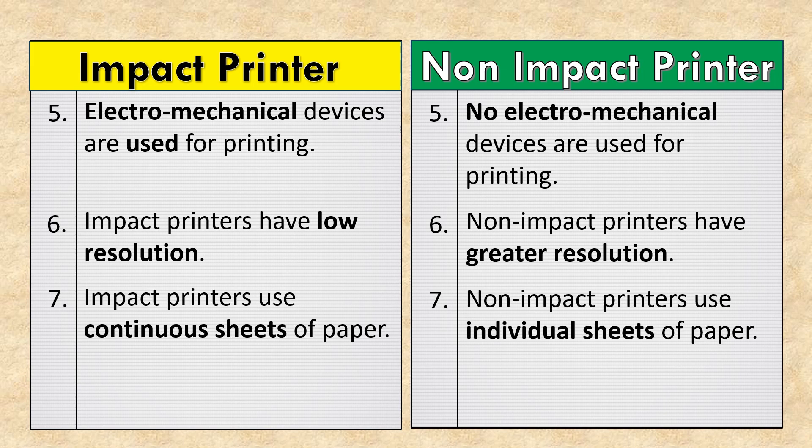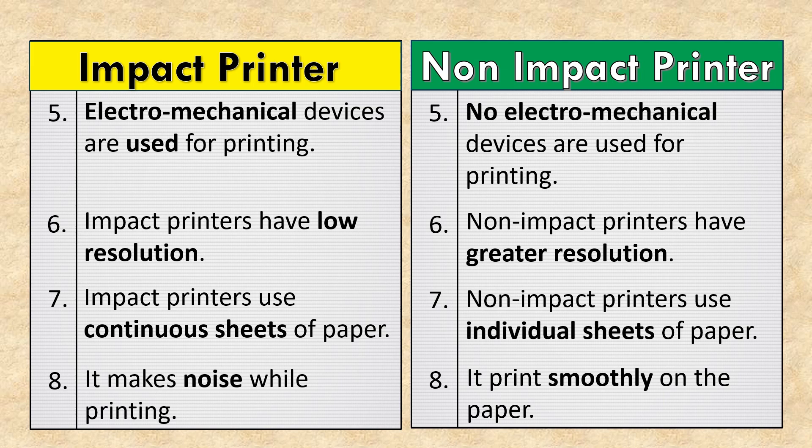Impact printers use continuous sheets of paper, while non-impact printers use individual sheets of paper. Impact printers make noise while printing, whereas non-impact printers print smoothly on the paper.